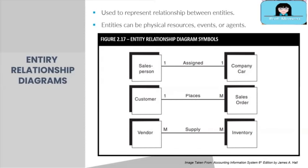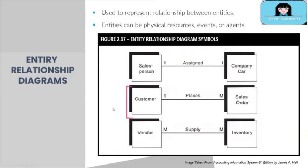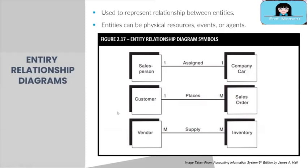To better understand this, let's use the diagrams. The first diagram shows a salesperson is assigned to a company car — the number one on each entity means one salesperson is assigned to one company car. The second diagram shows one customer can place many orders. The third diagram illustrates many vendors supplying many inventories, meaning a company has many vendors and a vendor can supply different kinds of inventories.